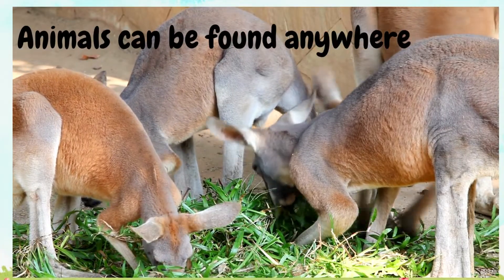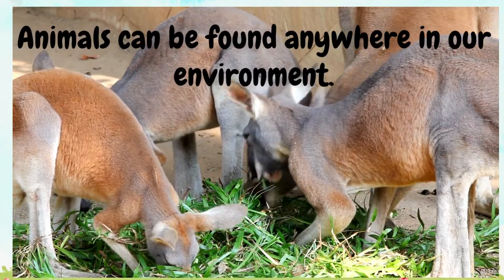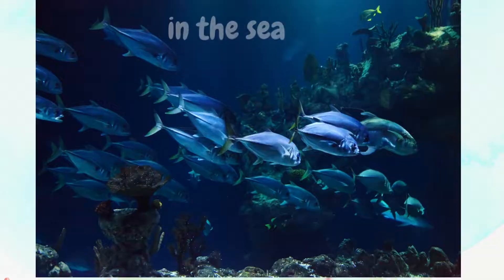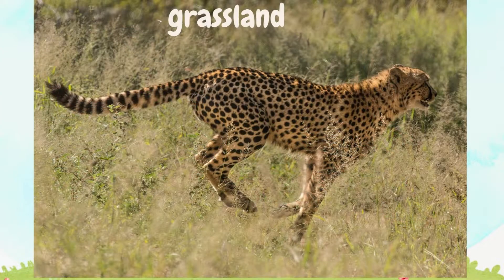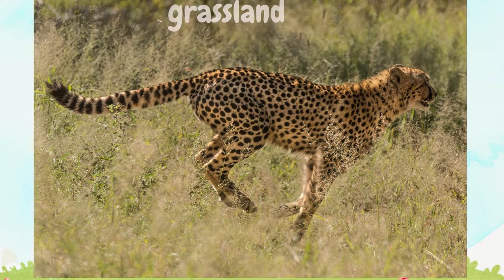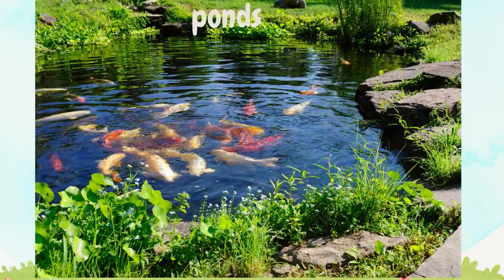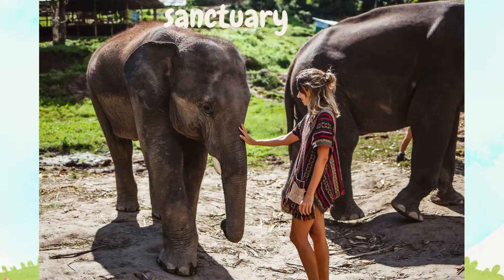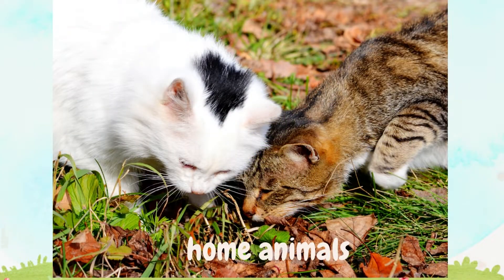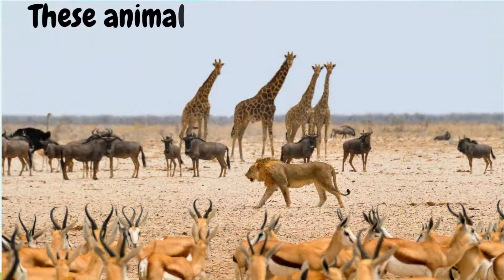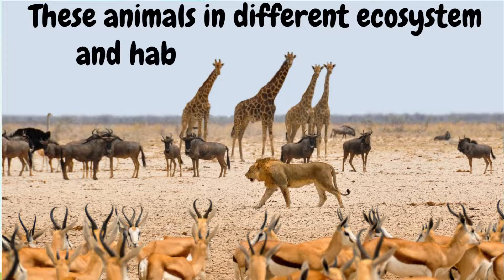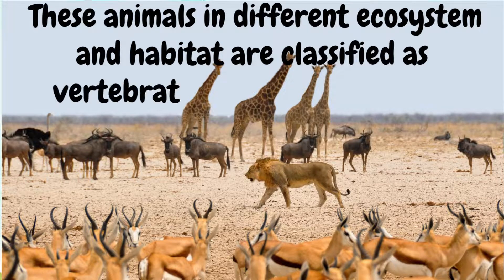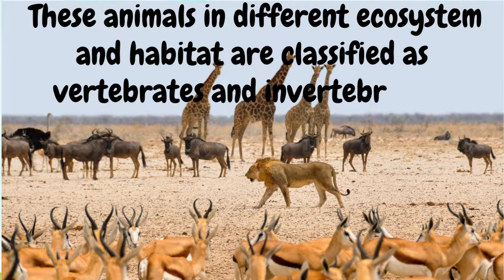Animals can be found anywhere in our environment — in the sea, grassland, forests, ponds, sanctuary, and even in our homes. These animals in different ecosystems and habitats are classified as vertebrates and invertebrates.